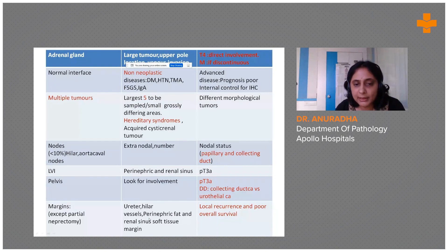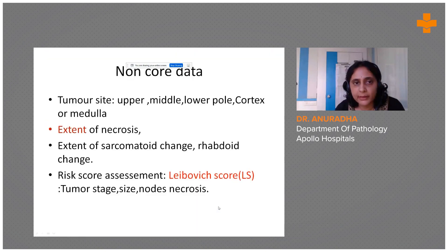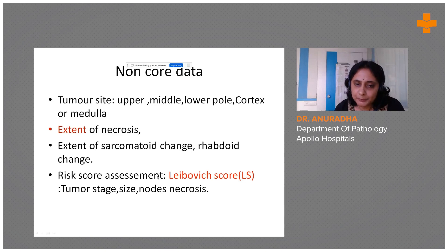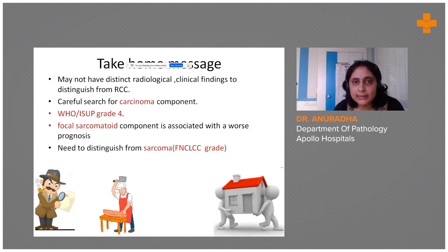If the margins are involved, it results in local recurrence and poor overall survival. There are also non-core data items which mainly depend upon the extent of necrosis and the rhabdoid change, and risk score assessment — like the NPI index used for breast — also influences risk assessment for these patients.